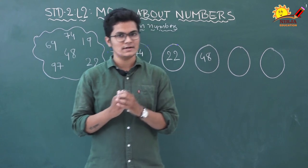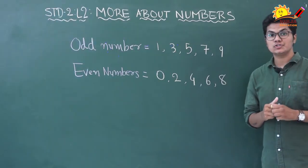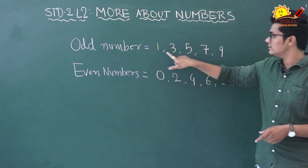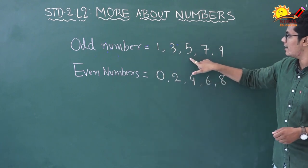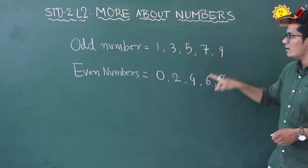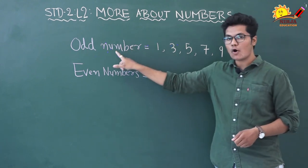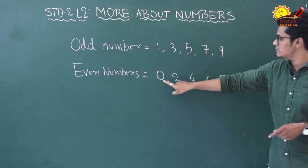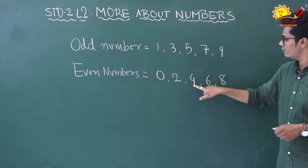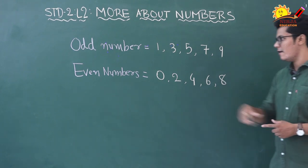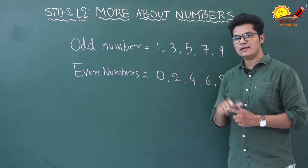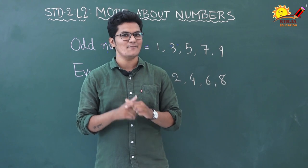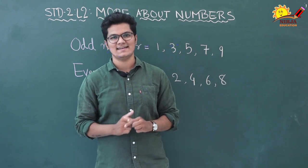Let's recap: the number whose ones place has one, three, five, seven, or nine is an odd number. The number whose ones place has zero, two, four, six, or eight is an even number. Identifying odd and even numbers is very easy!